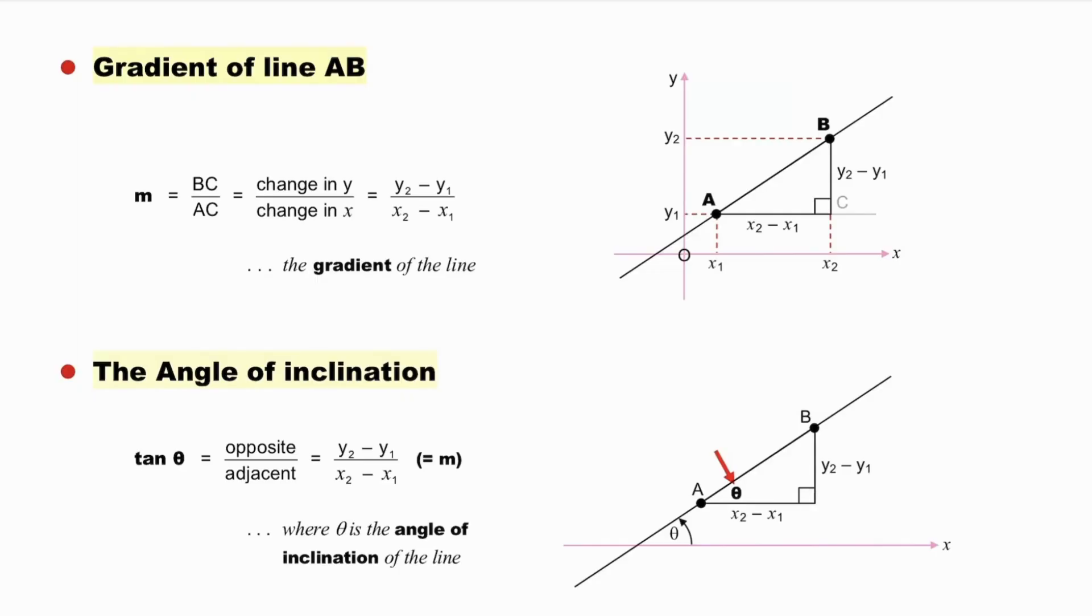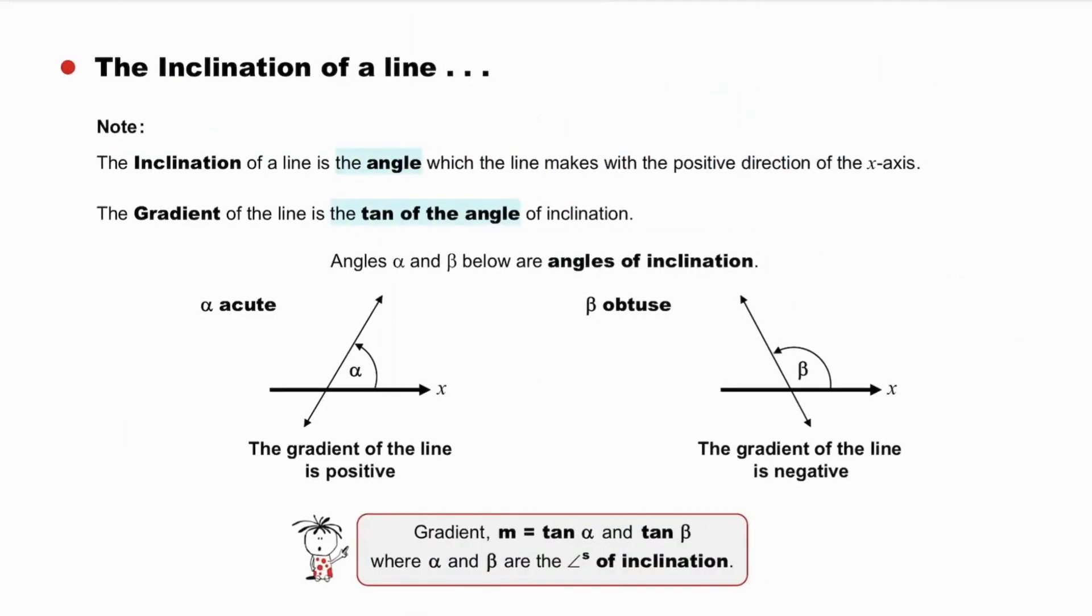So, what is the angle of inclination? Also sometimes referred to as just the inclination. The inclination of a line is the angle which the line makes with the positive direction of the x-axis, whereas the gradient of the line is the tan of that angle of inclination. See angles of inclination below: acute angle alpha and obtuse angle beta. The gradient of this line is positive, and the gradient of this line is negative. Why is this so?